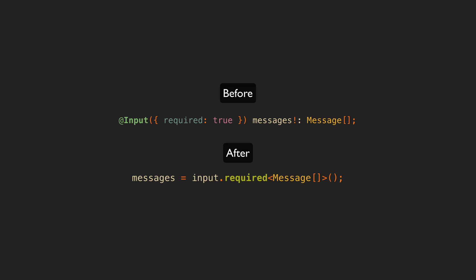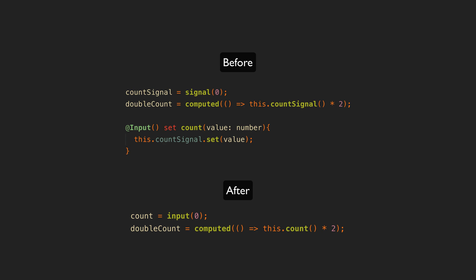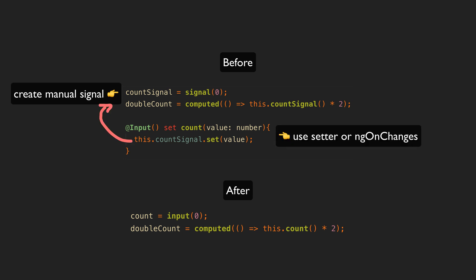Let's use the classic double count example. We might have an input that allows us to supply a count, but we want to create some derived value from that called double count. In a normal non-input scenario this was already easy to do with signals. But if the original count was an input we would have to use some kind of workaround like ngOnChanges or an input setter to react to the input changing.